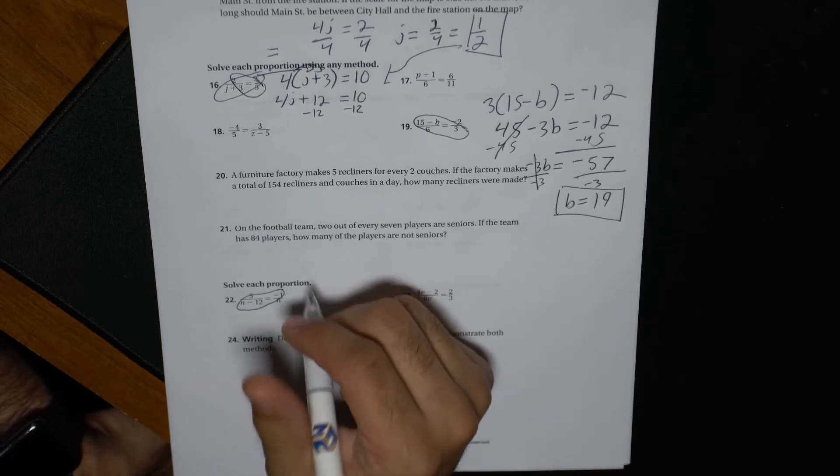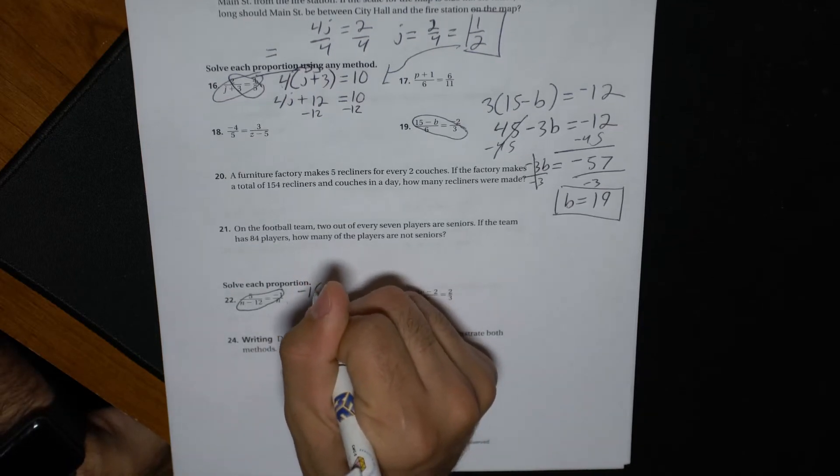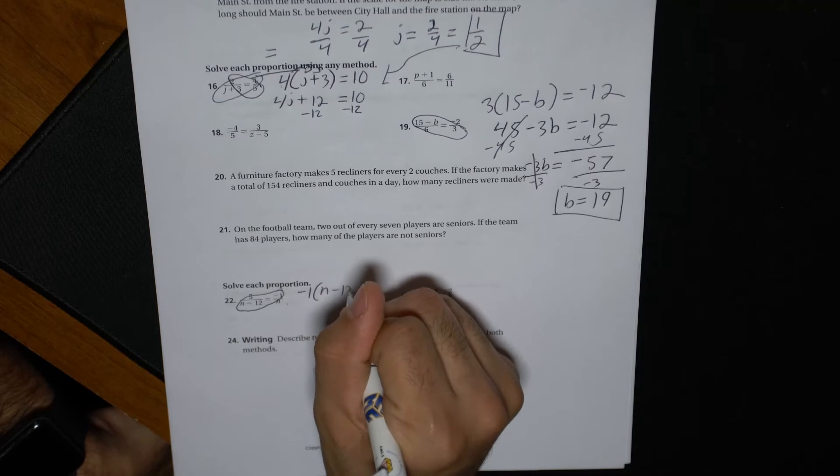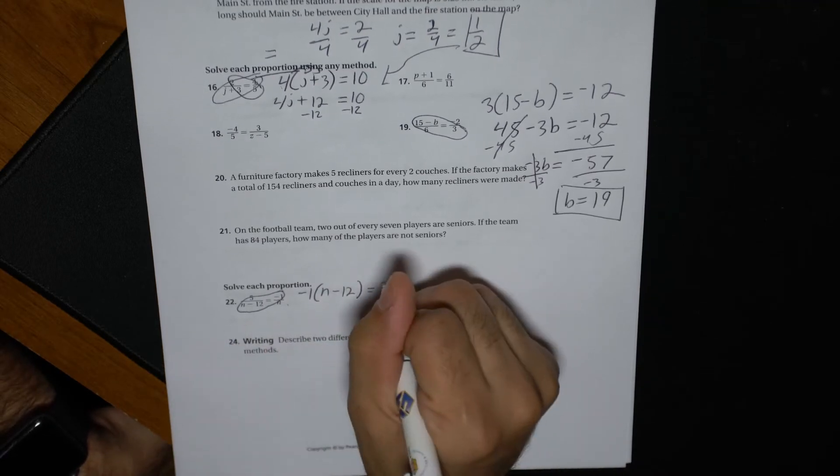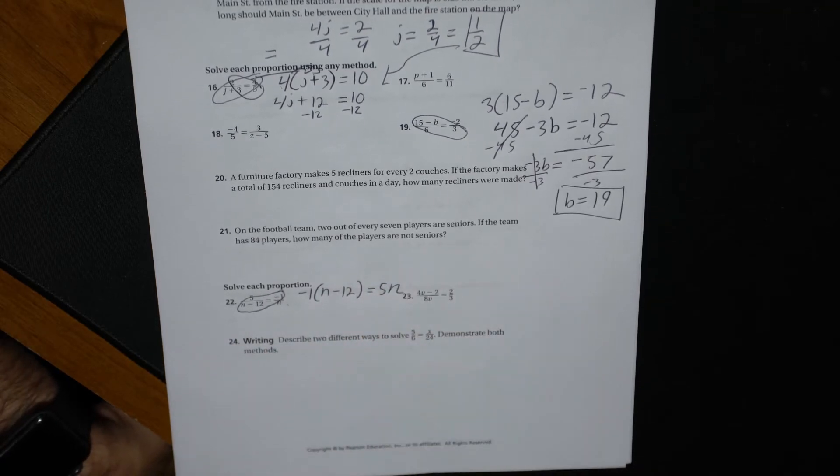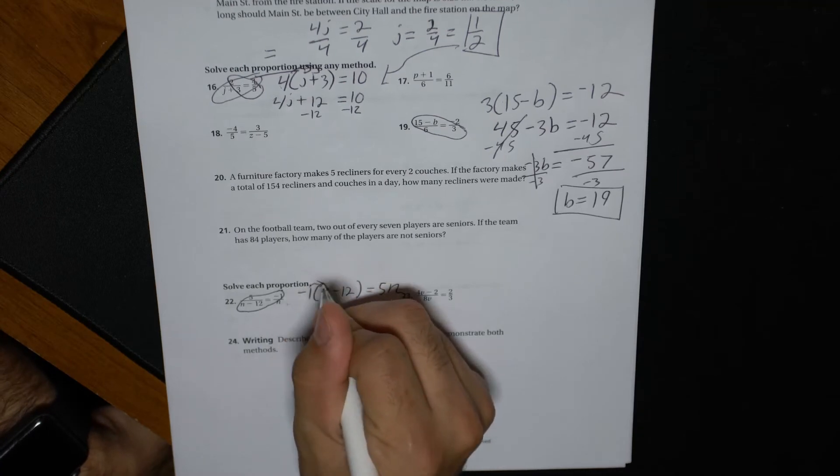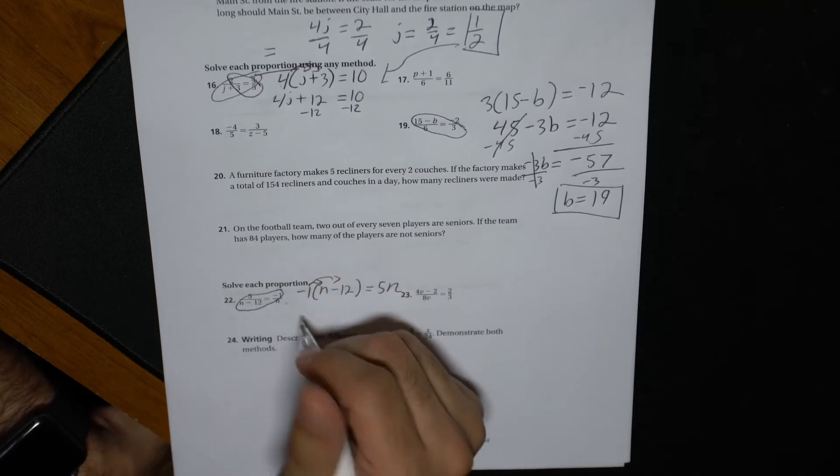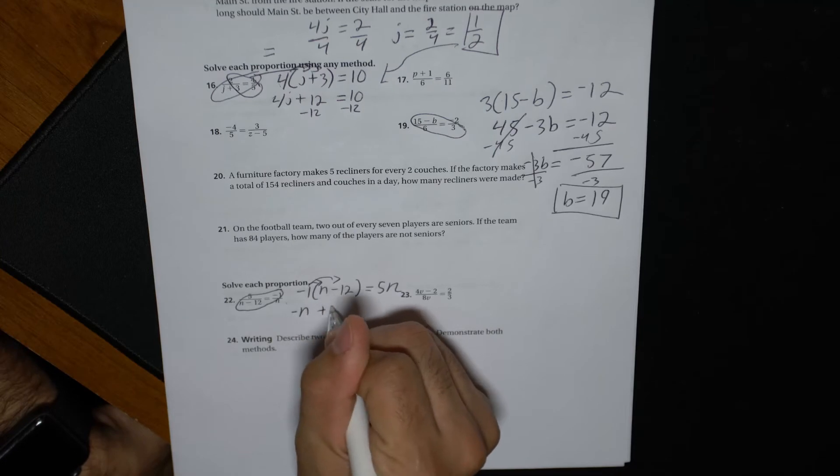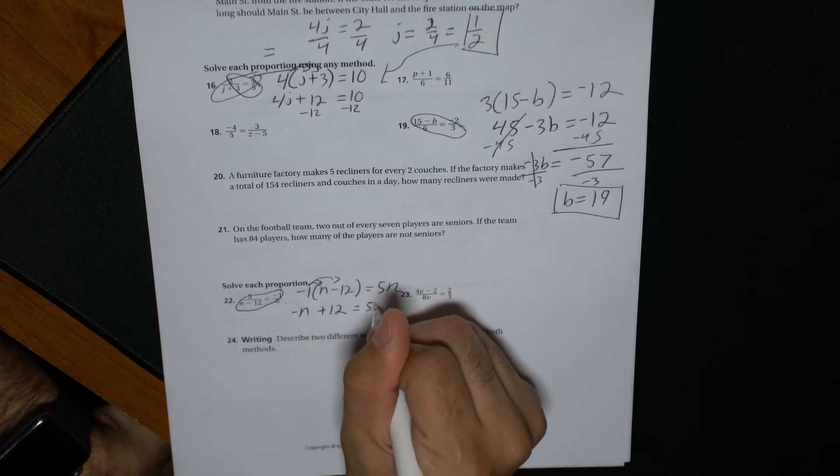So what we're going to do here is we're going to cross multiply negative one parentheses and minus 12 equals five times n is five n. We get, we got to multiply the negative one, so that's negative n plus 12 equals five n.